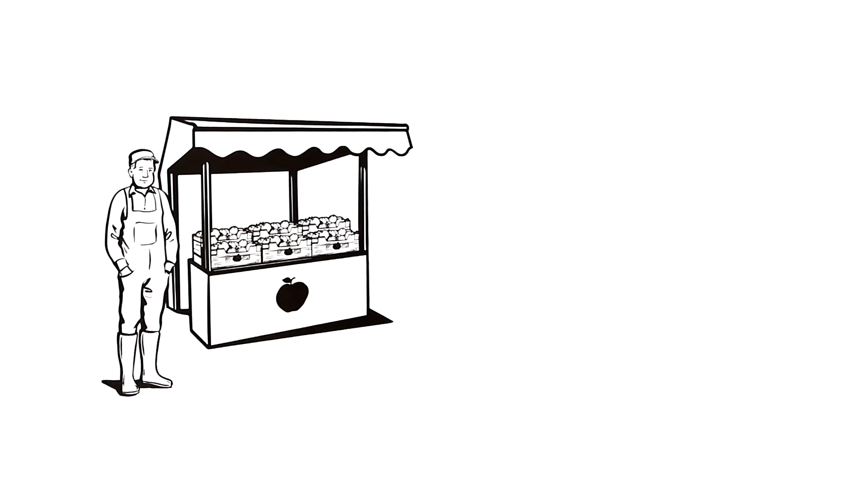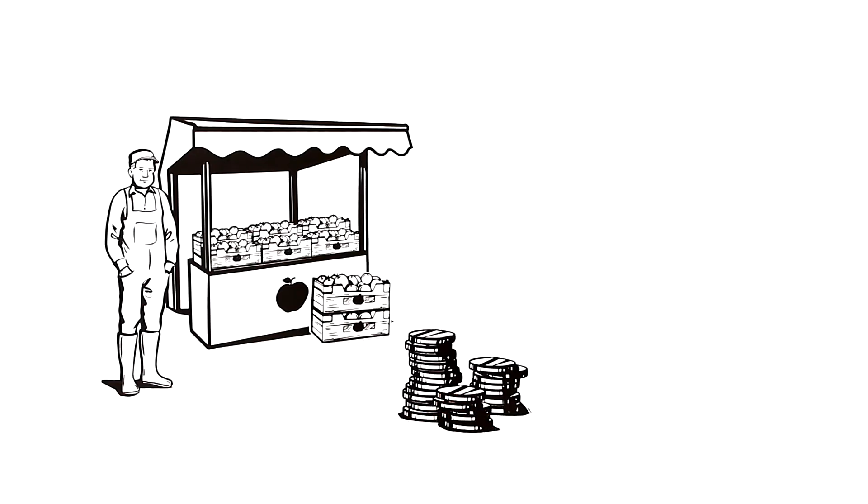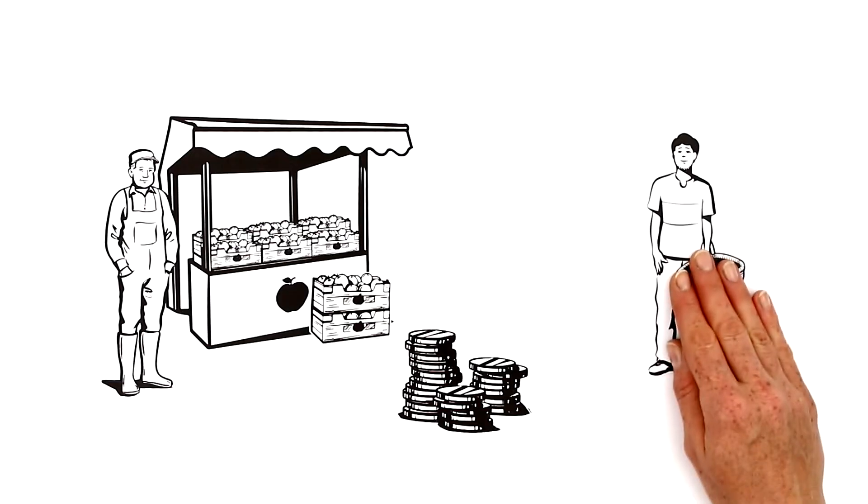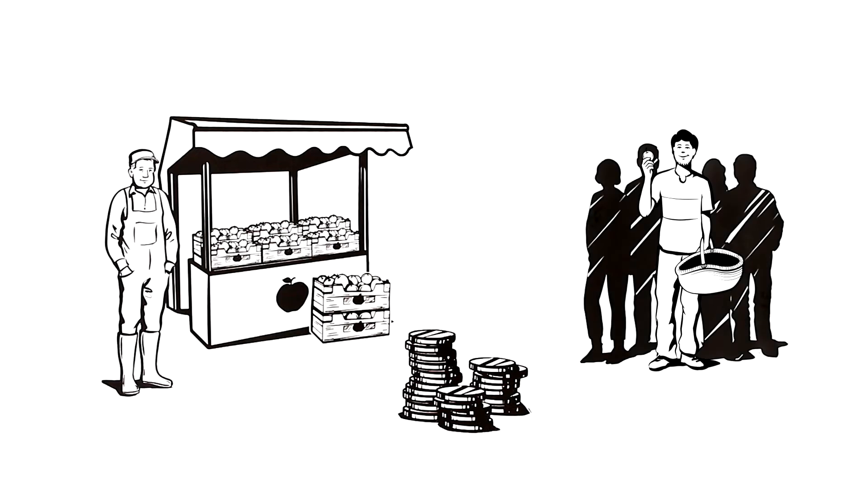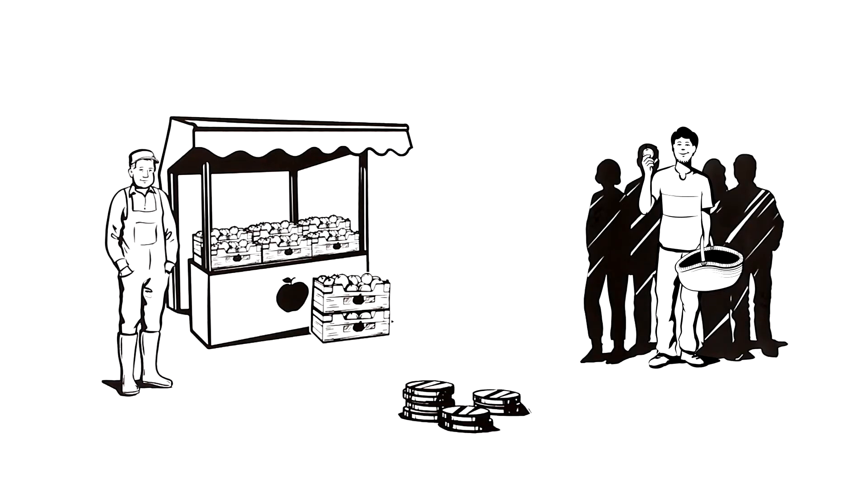This is Farmer Davies. He sells his apples at the market and wants to sell as many as possible at a good price. One of his customers is John. By contrast, John and the other market goers who love fresh fruit want to spend as little as possible on it.